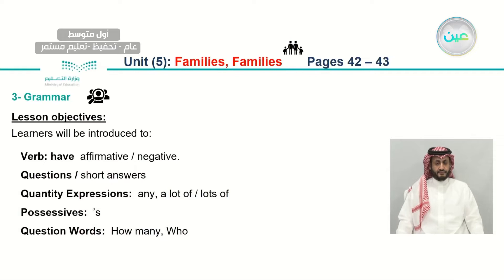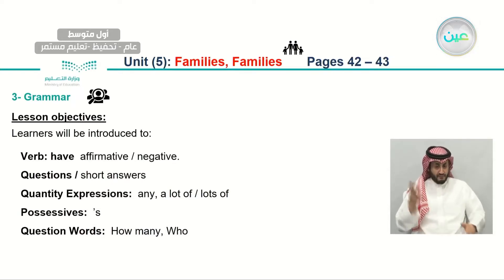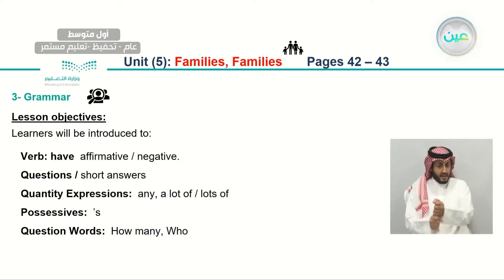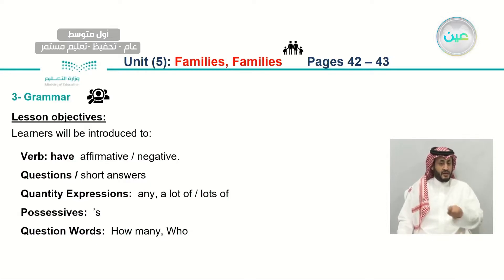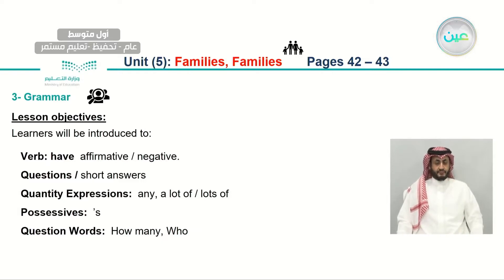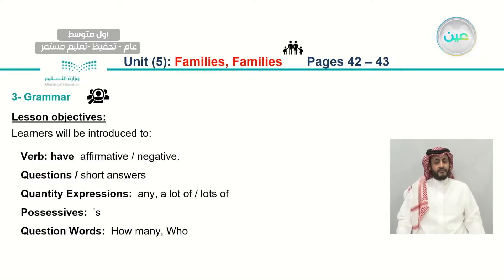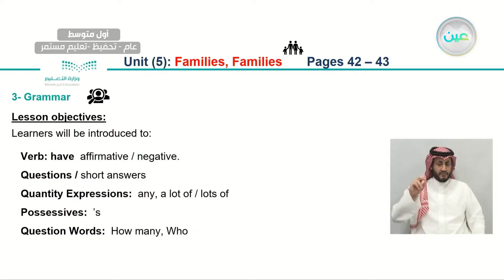Let's start our new lesson — Unit 5, Families, pages 42 and 43. Our lesson today is Grammar. The lesson objectives: learners will be introduced to the verb 'have' in affirmative and negative form, questions and short answers, quantity expressions like 'any,' 'a lot of,' 'lots of,' possessives with 's,' and question words like 'how many' or 'who.'